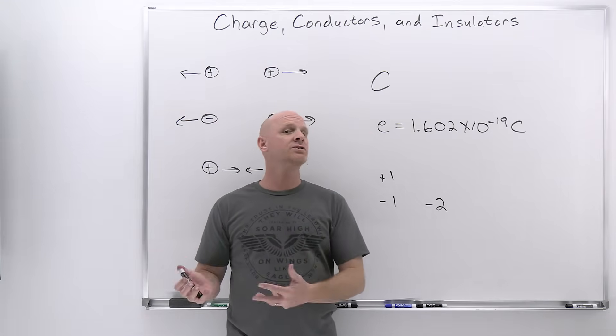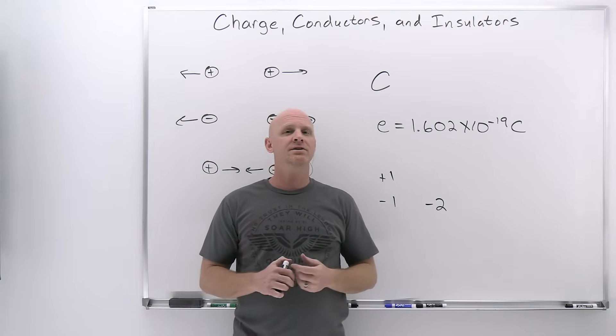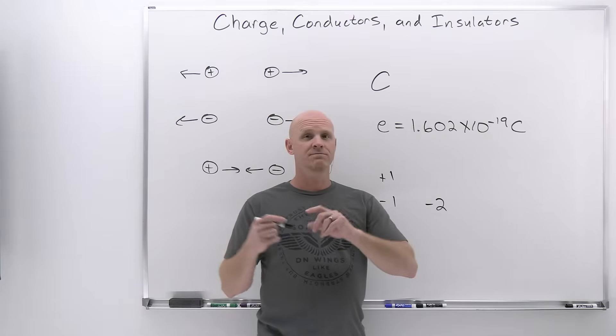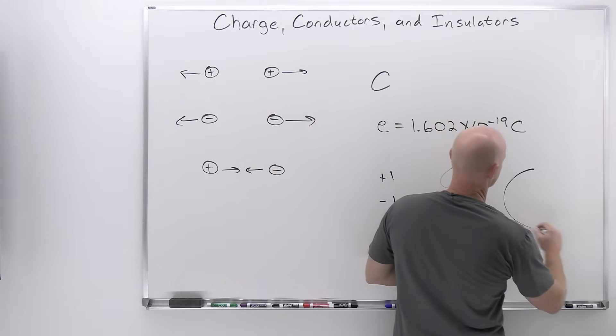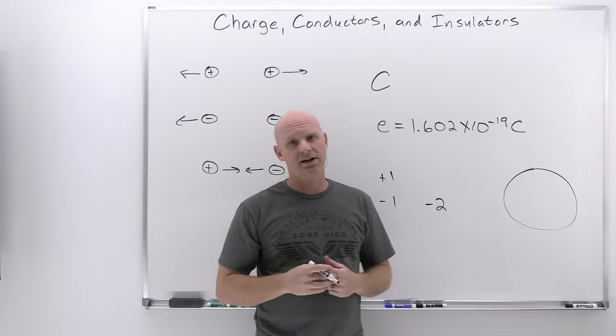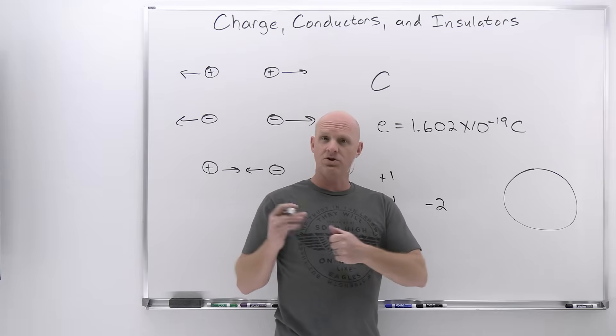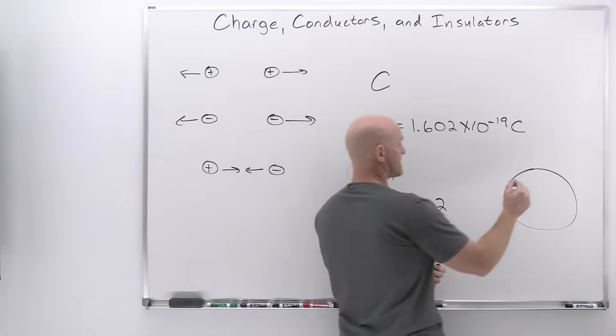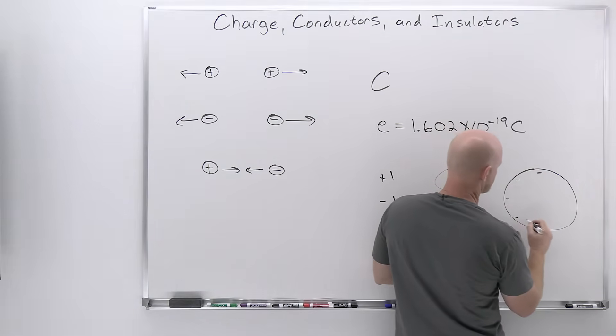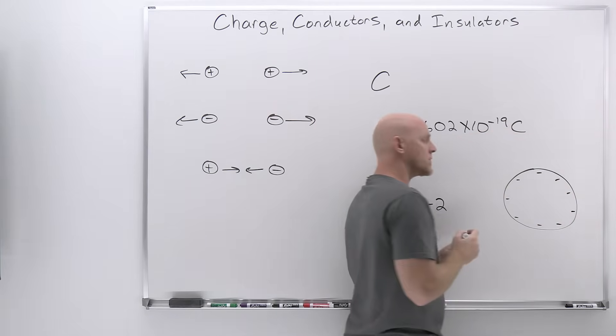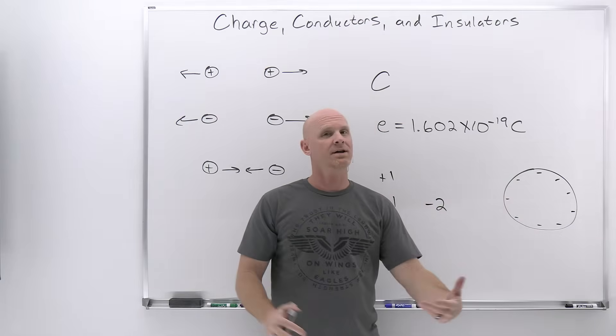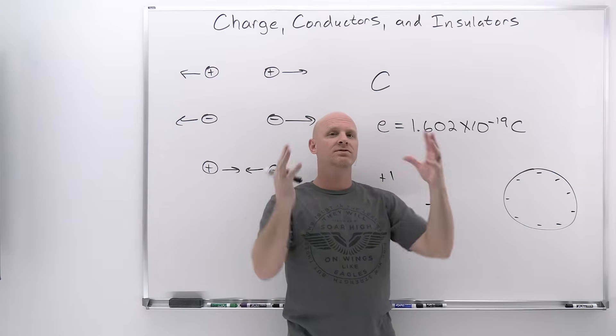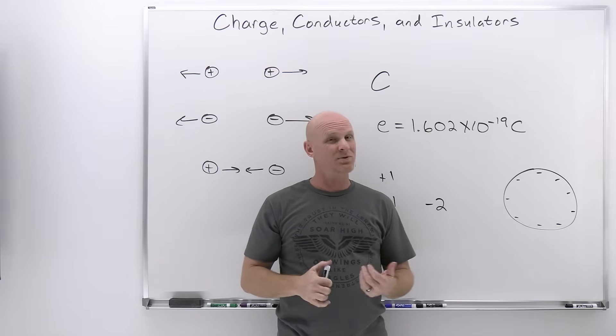A conductor is any material that allows charge to move around freely throughout that substance. Typically we think of metals as conductors. If I've got a metal sphere with excess electrons, it has an overall negative charge. These negative charges all repel each other, and being a conductor, it allows electrons to move freely. They're going to get as far apart as possible, so they're going to all move to the outer parts of this sphere. As a result of this being a conductor, they distribute themselves all along the surface of that metal sphere.